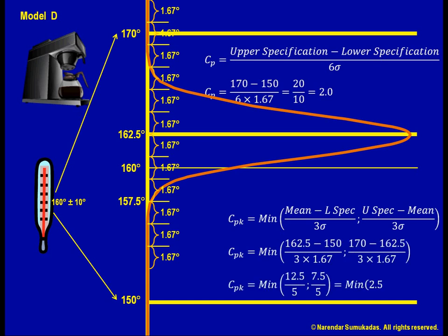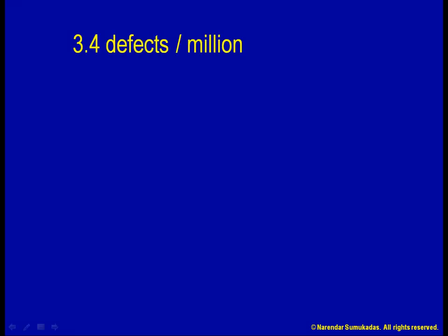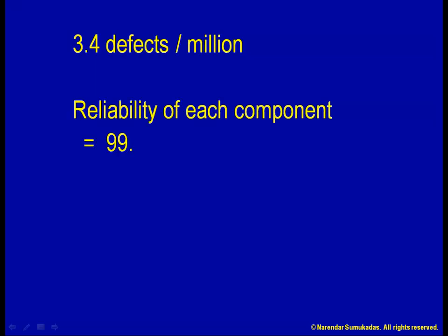Even though CP will be 2.0, CPK will be only 1.5. Such a process will produce about 3.4 defects per million. That is, it will be 99.99966% reliable.